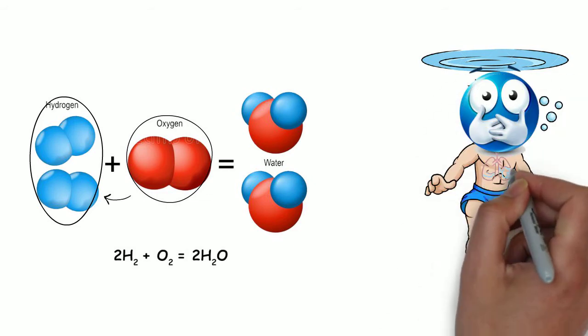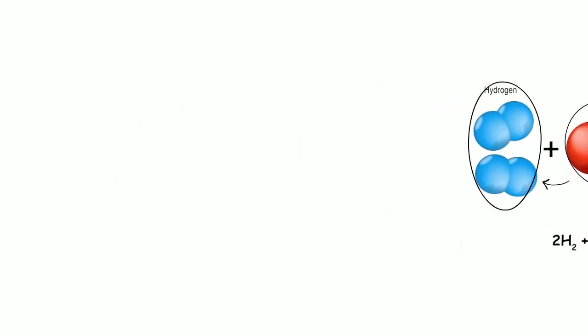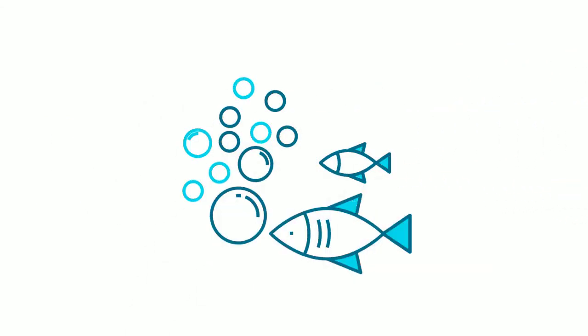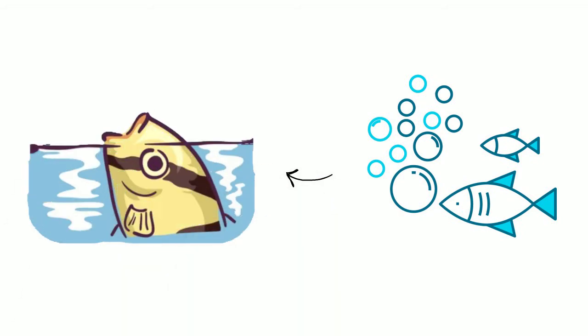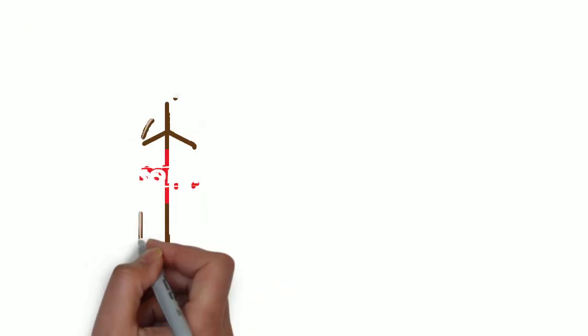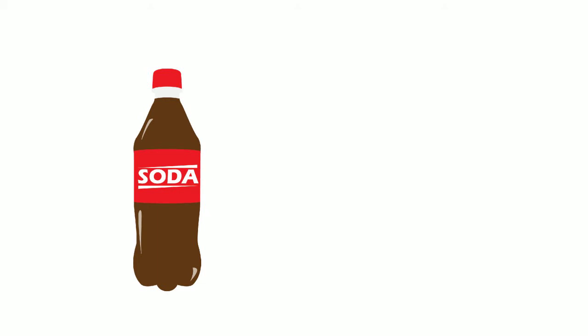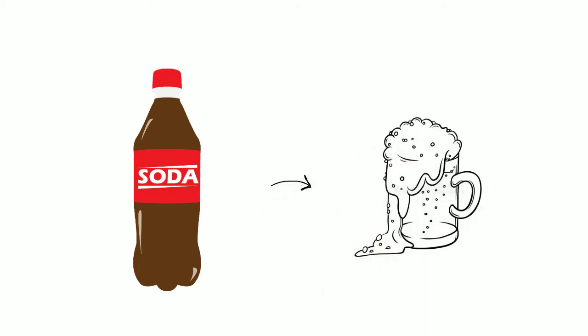The oxygen that fish breathe is not the oxygen in H2O, instead the fish are breathing O2, the oxygen gas that is dissolved in the water. Many different gases dissolve in liquids and we see an example all the time in carbonated beverages. In these beverages, there is so much carbon dioxide gas dissolved in water that it rushes out in the form of bubbles.